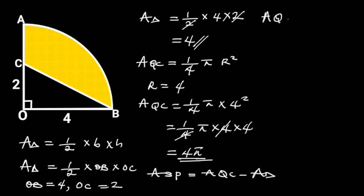The area of the quarter circle is equal to 4 pi. And the area of the triangle is 4. So, the area of the shaded portion is equal to 4 pi minus 4 square units.